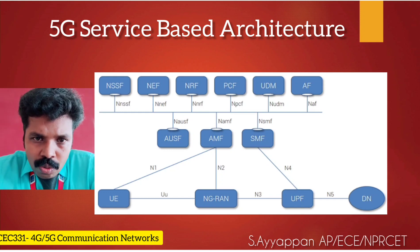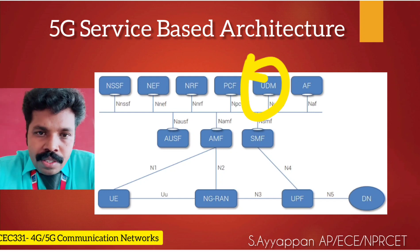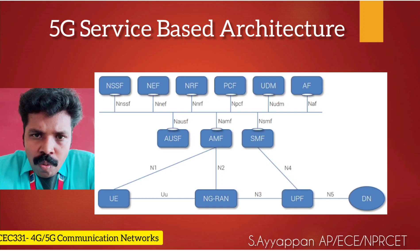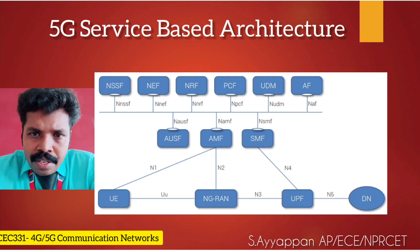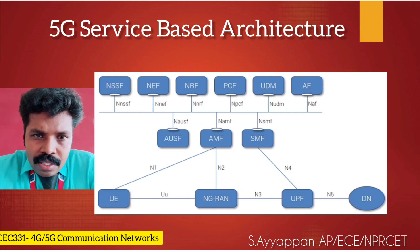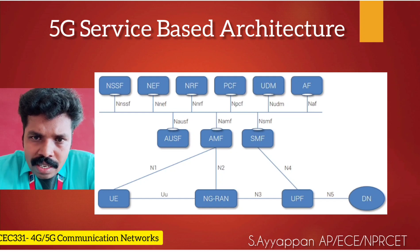Next we are going to talk about UDM, that means User Data Management. UDM is typically similar to HSS (Home Subscriber Server) in the 4G network. It takes care of management of all the user subscription data with the support of UDR, Unified Data Repository. It is similar to the front end of the HSS. It provides user data to the AMF for access and mobility management and to the SMF for session management. UDM typically holds all the permanent data for the user and resides in the home network.